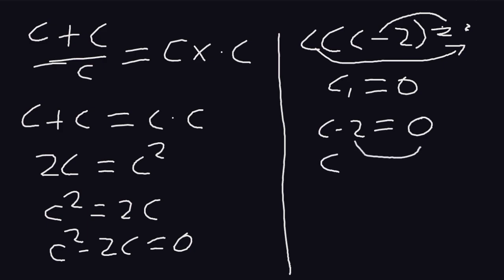The value of c: this will move to the right so that we have c as positive 2. So c1 is 0 and c2 is 2.